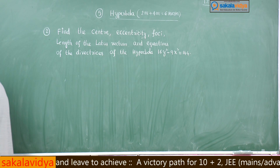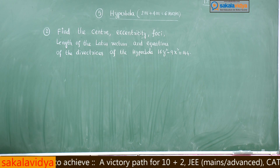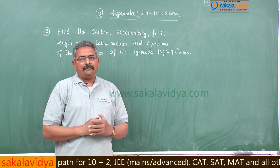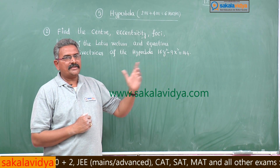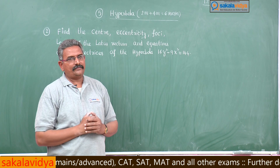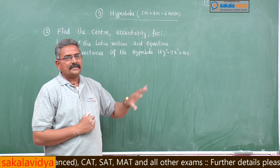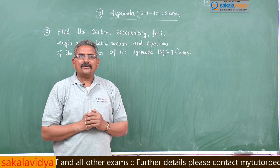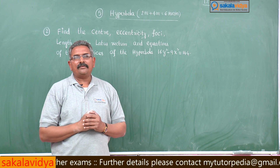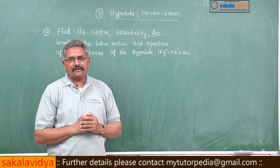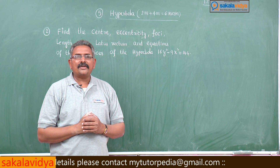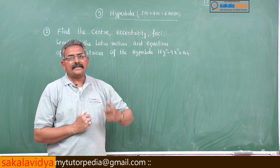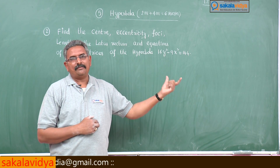This problem is very, very important because this problem is not in the standard form. This comes under the conjugate hyperbola. What is the general form of the conjugate hyperbola? That is x² by a² minus y² by b² is equal to minus 1, not 1. So this means it is the second form of the hyperbola.